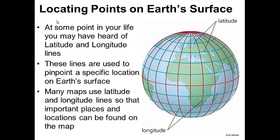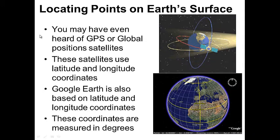Locating points on Earth's surface: At some point in your life you may have heard of latitude and longitude lines. These lines are used to pinpoint a specific location on Earth's surface. Many maps use latitude and longitude lines so that important places and locations can be found on the map.